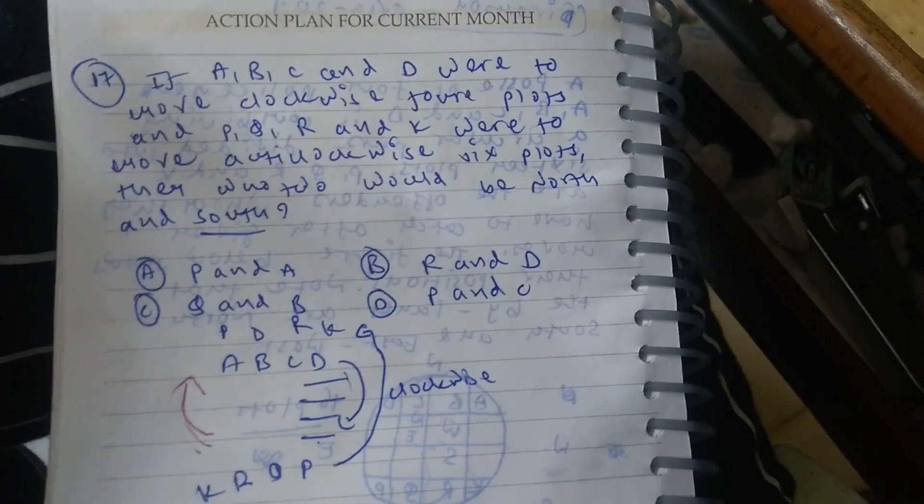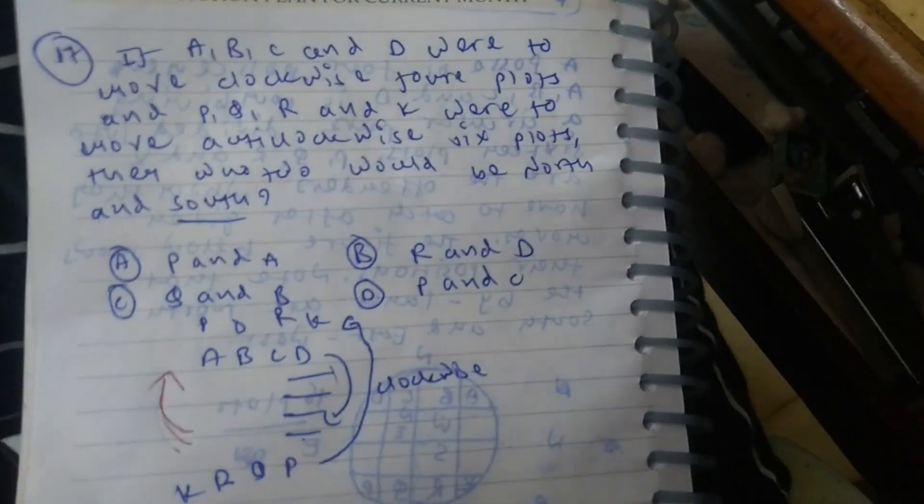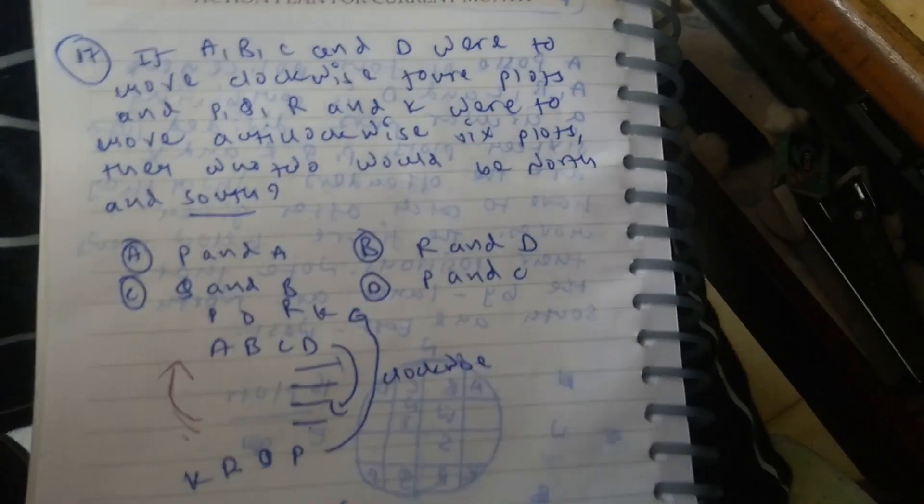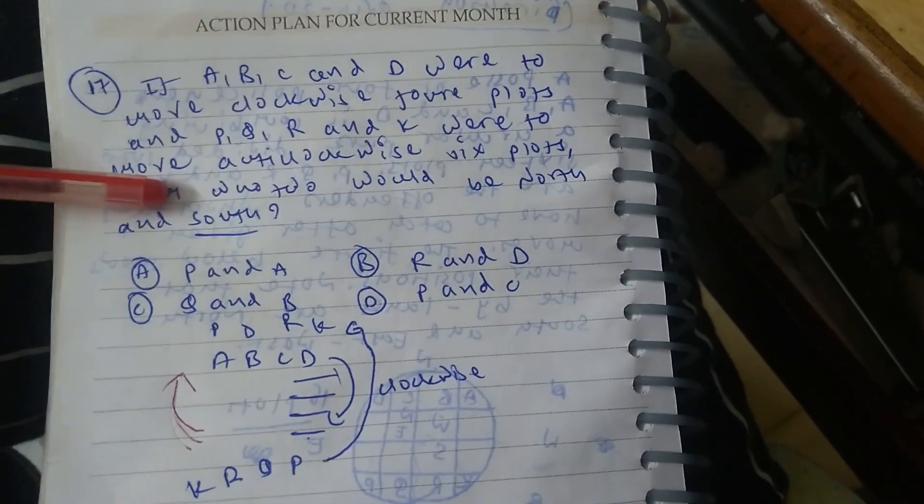and P, Q, R and K were to move anticlockwise direction, six plots, then who would be in the north and south region?